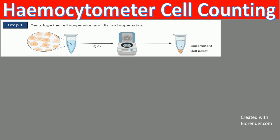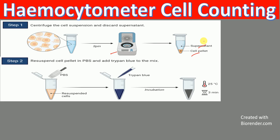So let's first talk about the process of counting the cell. To count the cells, first you collect your cells, and after collecting the cells you centrifuge them. After centrifugation you will have supernatant and the cell pellet. You remove the supernatant and you re-suspend the cell pellet either with PBS or with the cell culture media. I recommend the media. After the re-suspended mix, you will take 100 microliters and then you will add 100 microliters of trypan blue.